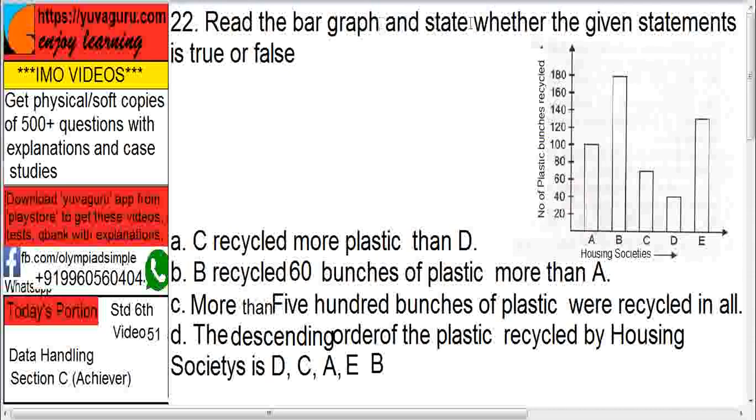Next, read the bar graph and state whether the given statements are true or false. This is the bar graph showing the number of plastic bunches recycled by housing societies. These are the five housing societies who have recycled plastic bunches.